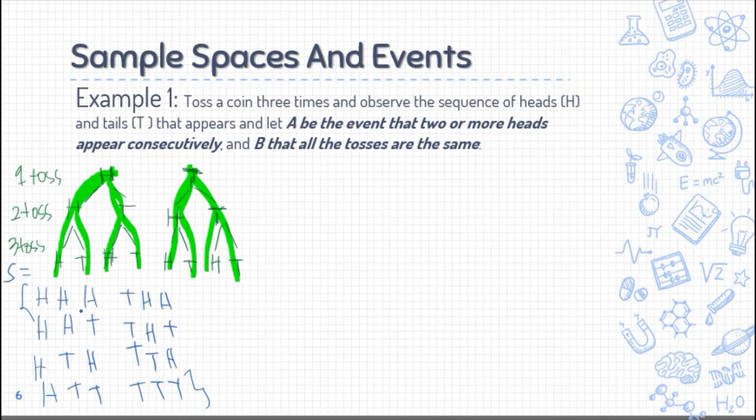So from the first toss you can get head or tail. If head was your first, the next can be head or tail. The same if tail was your first. On the third toss, for each branch it could be head or tail. In this case, you can see all the probable outcomes. This is now your set S. We have HHH, HHT, HTH, HTT, THH, THT, TTH, and TTT. Those are all the possible outcomes that you can get.